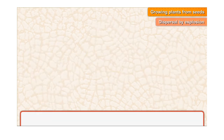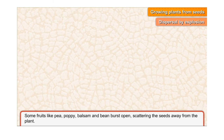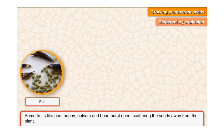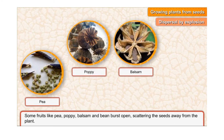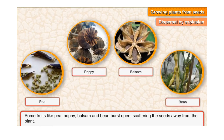Dispersal by explosion: Some fruits like pea, poppy, balsam, and bean burst open, scattering the seeds away from the plant.